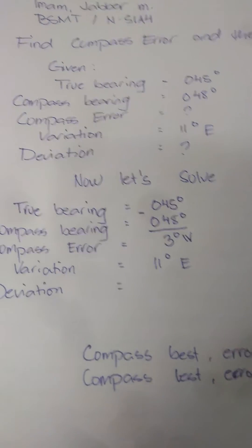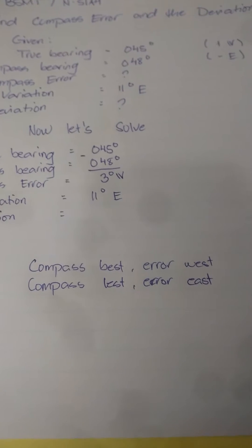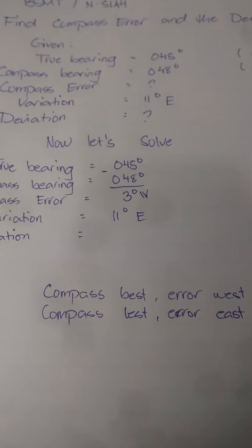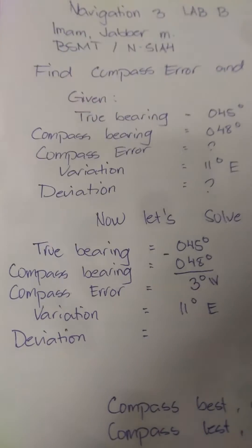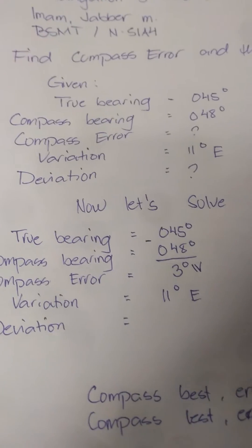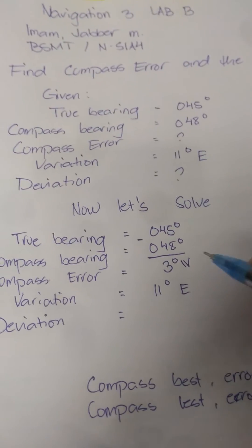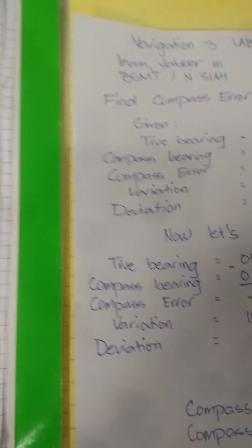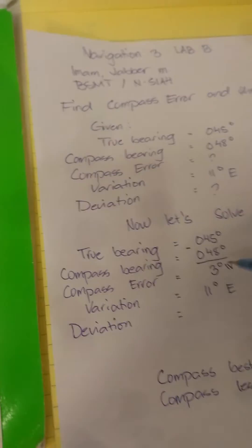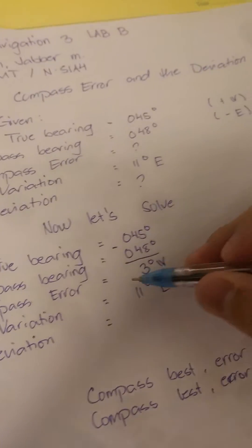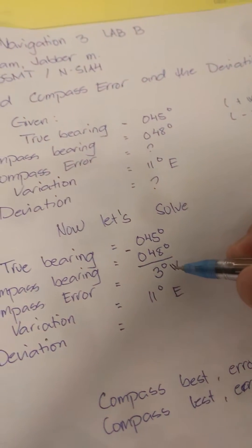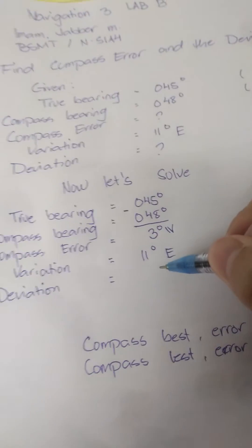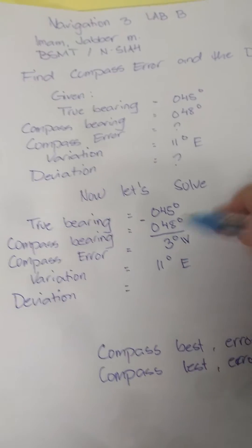because compass best, error west; compass least, error east. And then let's solve the compass error and variation to solve the deviation.